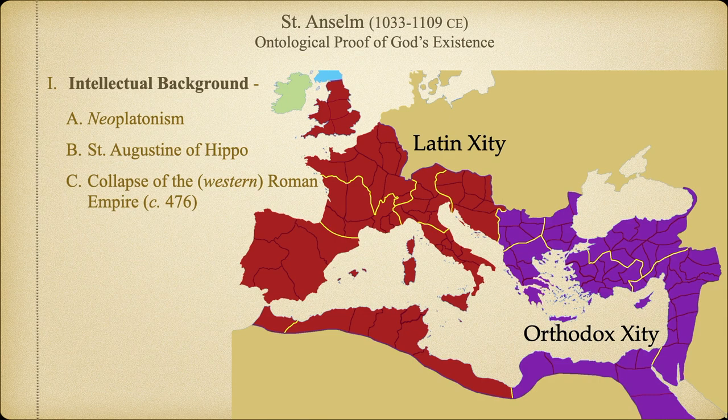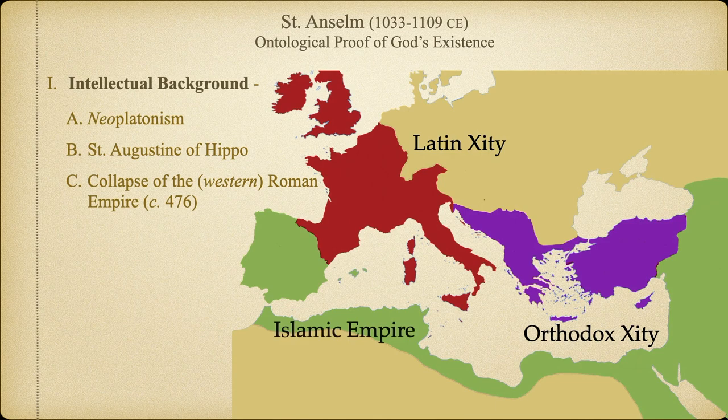By the 7th century, the new religion of Islam would spread east and west out of the Arabian Peninsula and significantly reduce the territory of the fading Eastern Roman Empire, now called the Byzantine Empire. This was the world of St. Anselm in the 11th century. His worldview was Augustinian, and therefore Neoplatonic. This philosophical underpinning will be essential to understanding the metaphysical assumptions that support his ontological argument for God's existence.